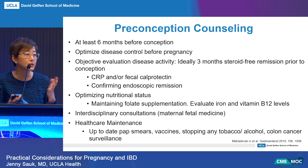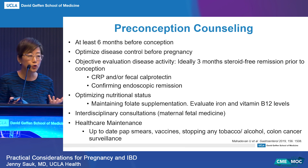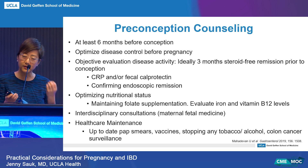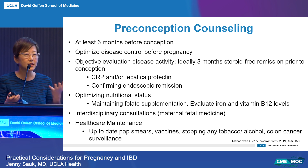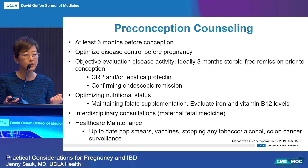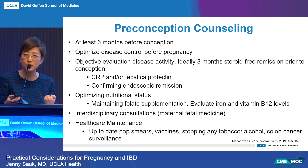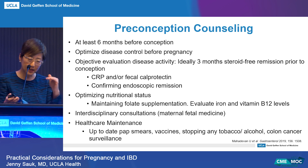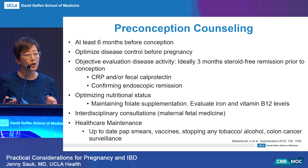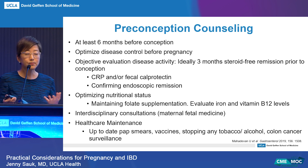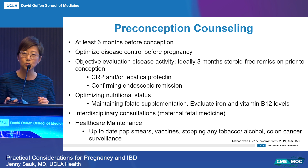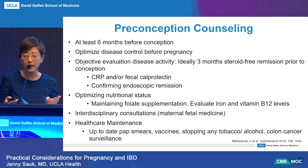This should happen about six months before conception. You want to optimize disease control before pregnancy and assess for objective evidence of disease control — at least three months of steroid-free clinical remission, endoscopic remission if possible, and baseline CRP and fecal calprotectin levels. You want to optimize nutritional status, maintain folate supplementation, and evaluate iron and vitamin B12 levels. This is also a good time for interdisciplinary consultations with maternal-fetal medicine, Pap smears, colon cancer surveillance, stopping risk behaviors, and ensuring vaccines are up to date.